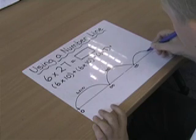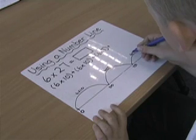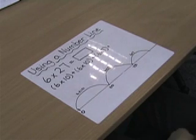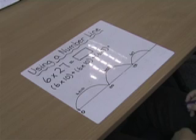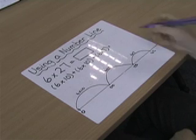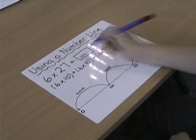Then I'll do a jump of 6 times 7, which equals 42. 120 plus 42 equals 162. The answer is 162.